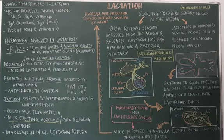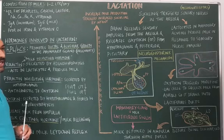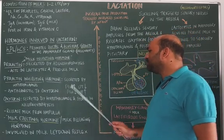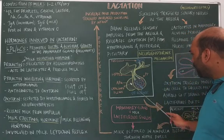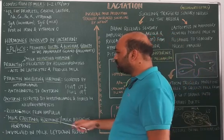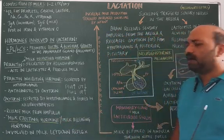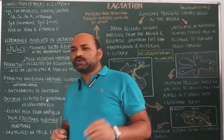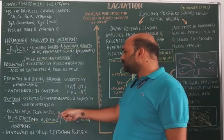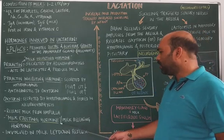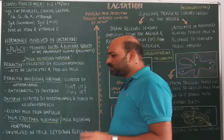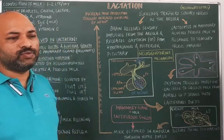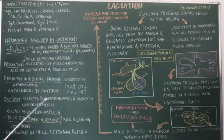The next hormone is oxytocin, secreted by the neurosecretory cells of the hypothalamus and stored in the posterior pituitary or neurohypophysis. Oxytocin is involved in releasing the milk temporarily stored in the ampulla or lactiferous sinus. Because oxytocin is involved in releasing milk, it is commonly called the milk ejecting hormone or milk releasing hormone. Oxytocin is involved in the milk let-down reflex — the releasing of milk from the mammary gland into the buccal cavity of the suckling.